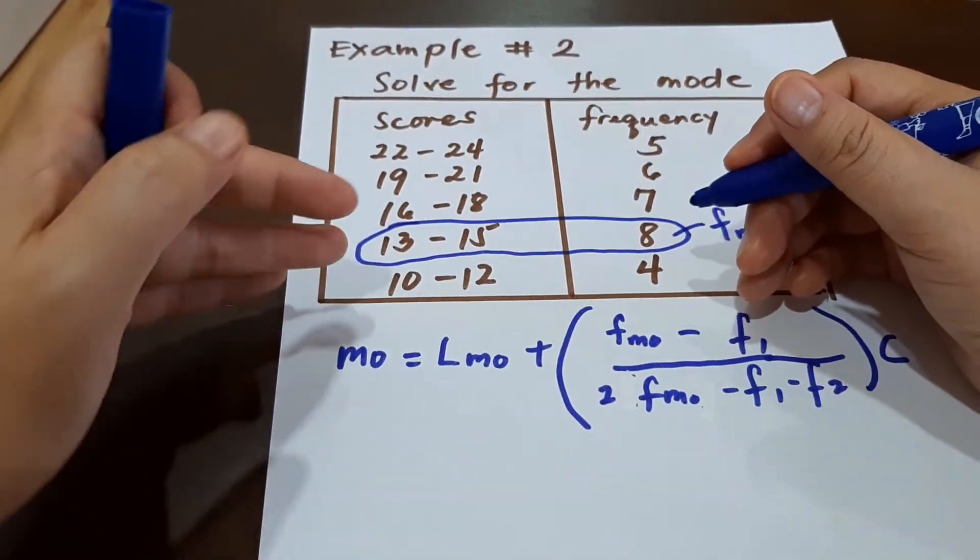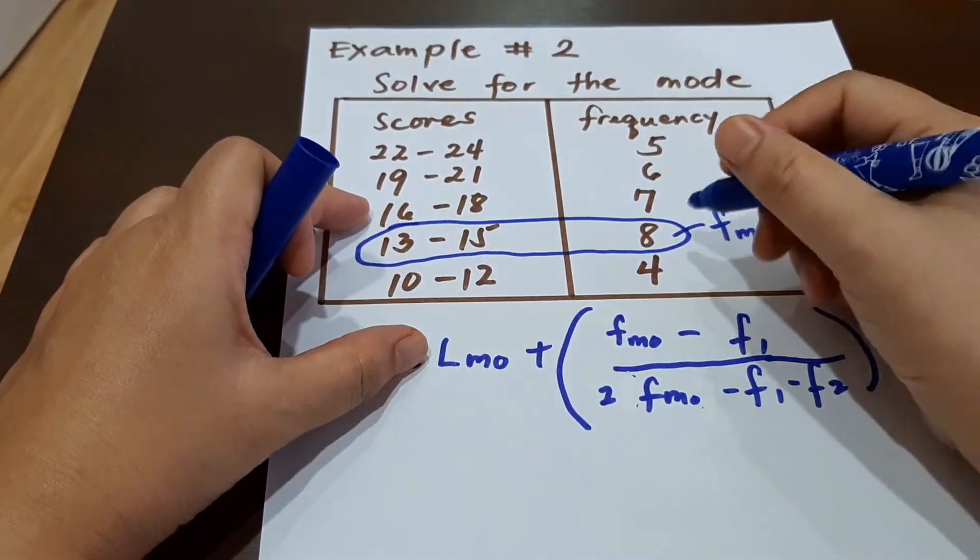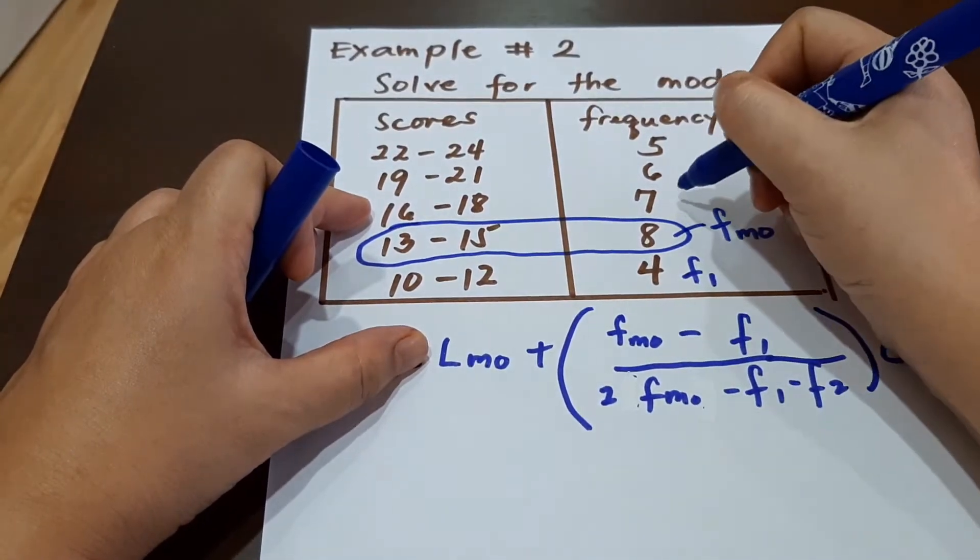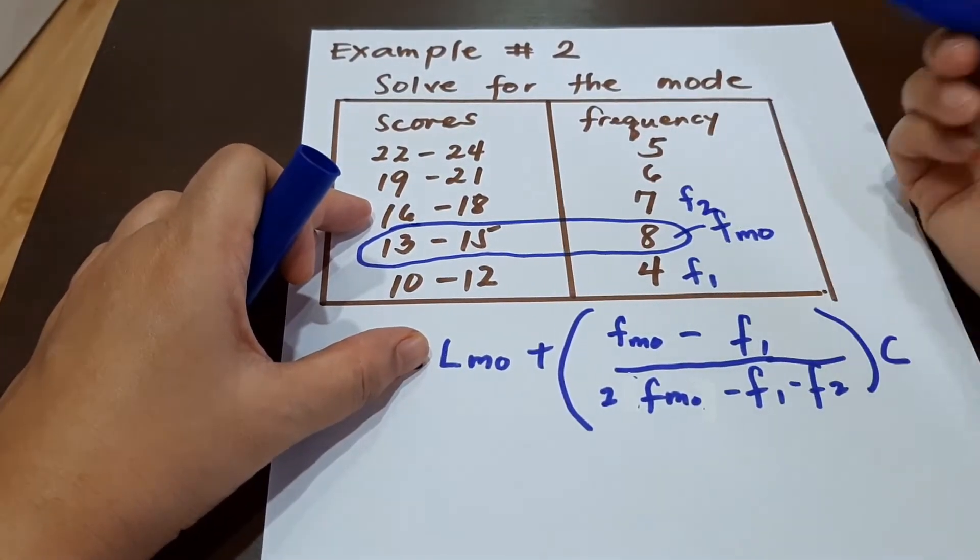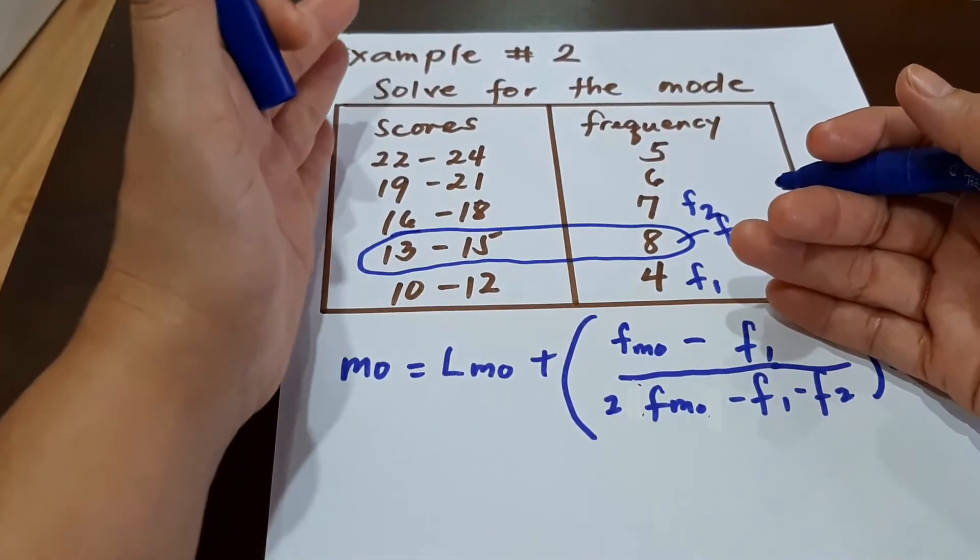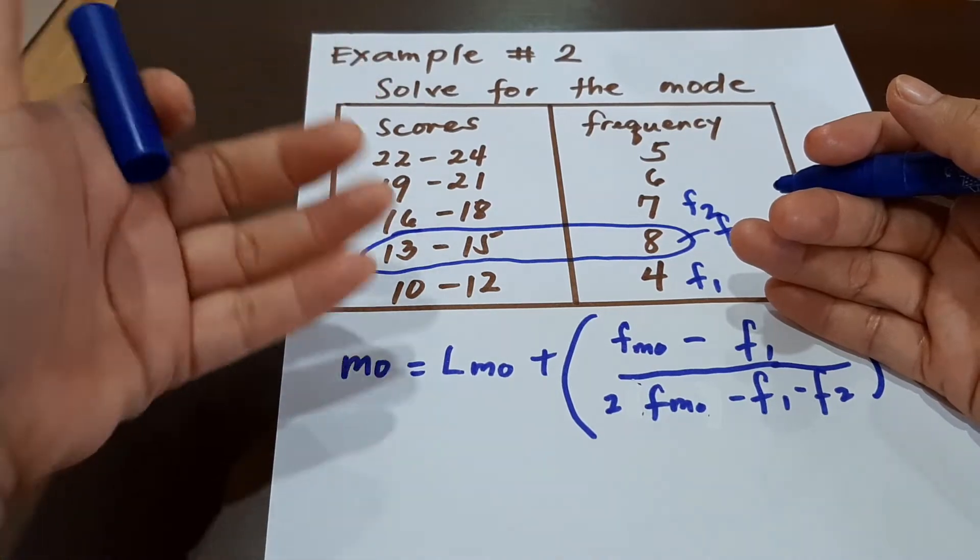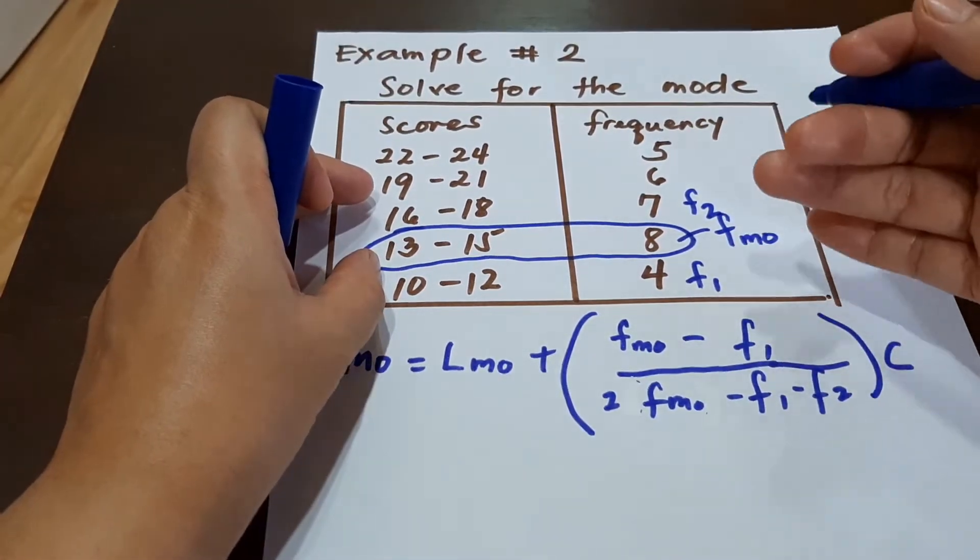Because this is arranged from highest to lowest, therefore this will be our F sub 1, and this will be our F sub 2. So when you are computing, make sure to look at the arrangement of your scores first before you identify your F sub 1 and your F sub 2.